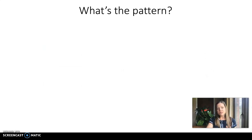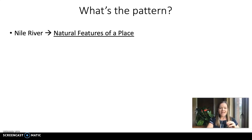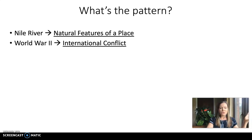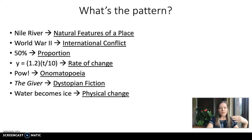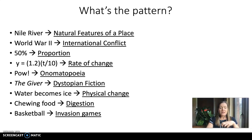The first step is to make sure that whatever we're teaching has some organizational structure, some organizing ideas. I have here a bunch of words — notice the pattern: river maps to natural features of a place, World War II maps to international conflict, 50% maps to proportion. The words that are underlined are those organizing ideas. Sometimes teachers have to go a little bit more abstract than what they normally think about, to make sure we've got these organizing ideas, because otherwise transfer becomes really difficult.